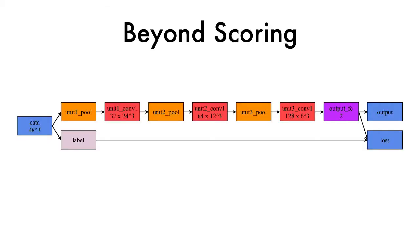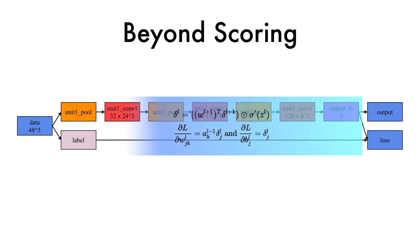However, our goal is to go beyond simply scoring structures. During training, backpropagation updates the weights of the network to better match the input. But once trained,